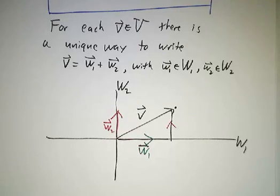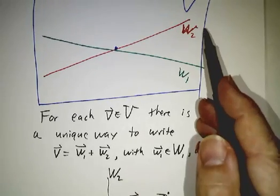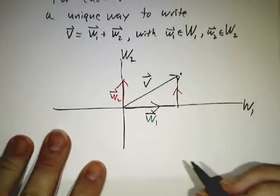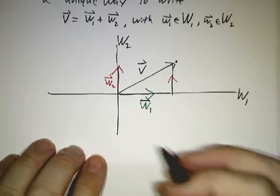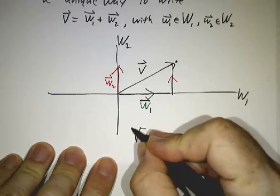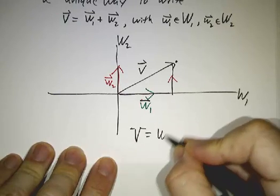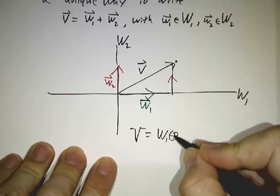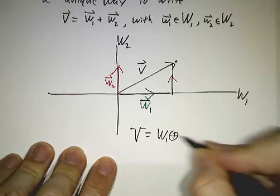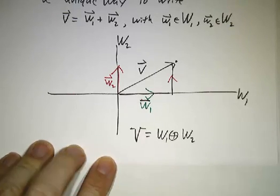When that happens, we say that V is the internal direct sum of W1 and W2, and we use the same notation as for the external direct sum. We write the big space is the first space, plus sign with a circle around it, second space.